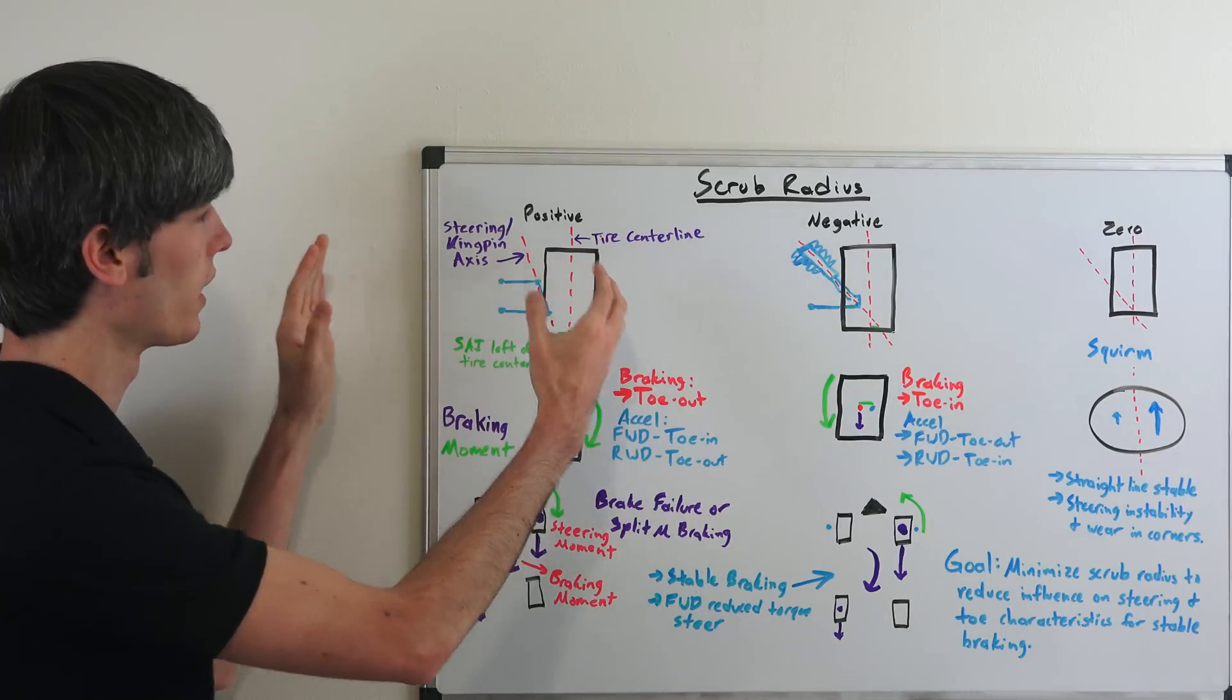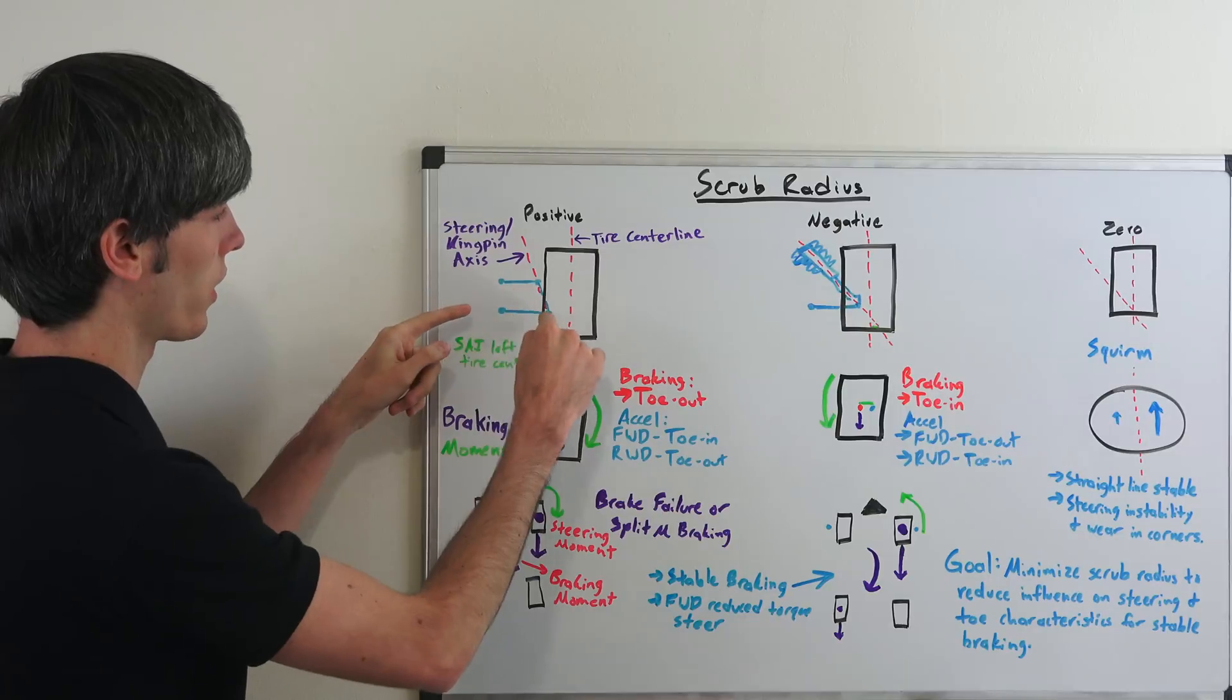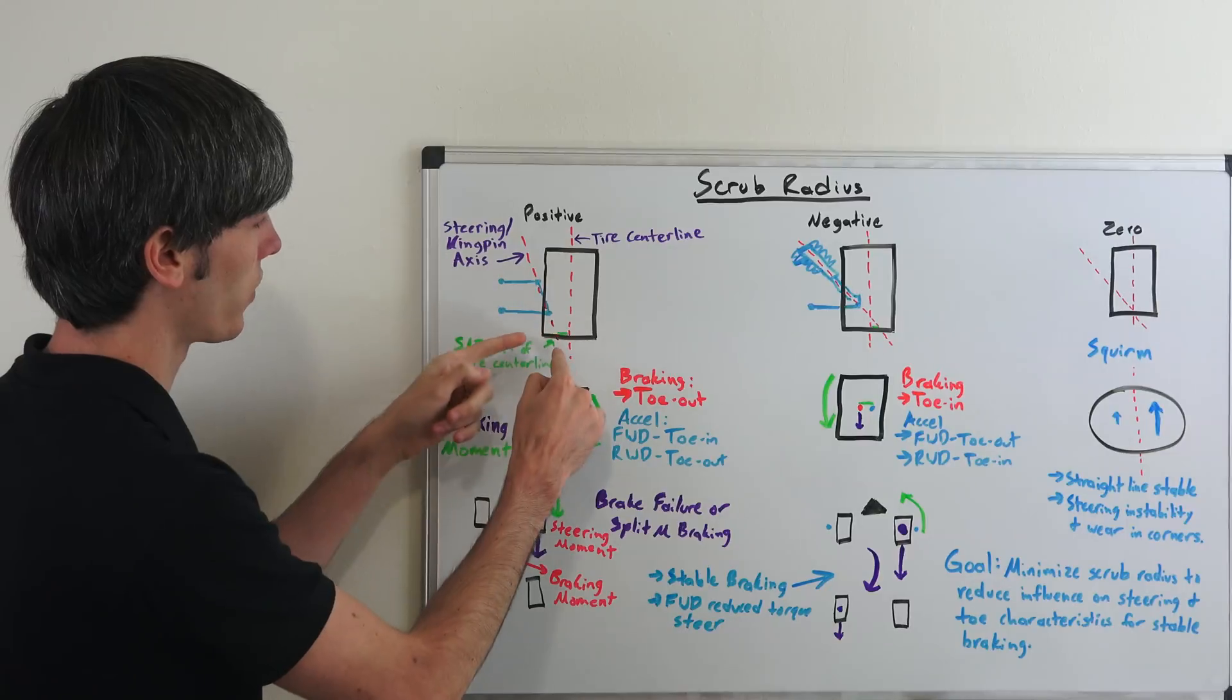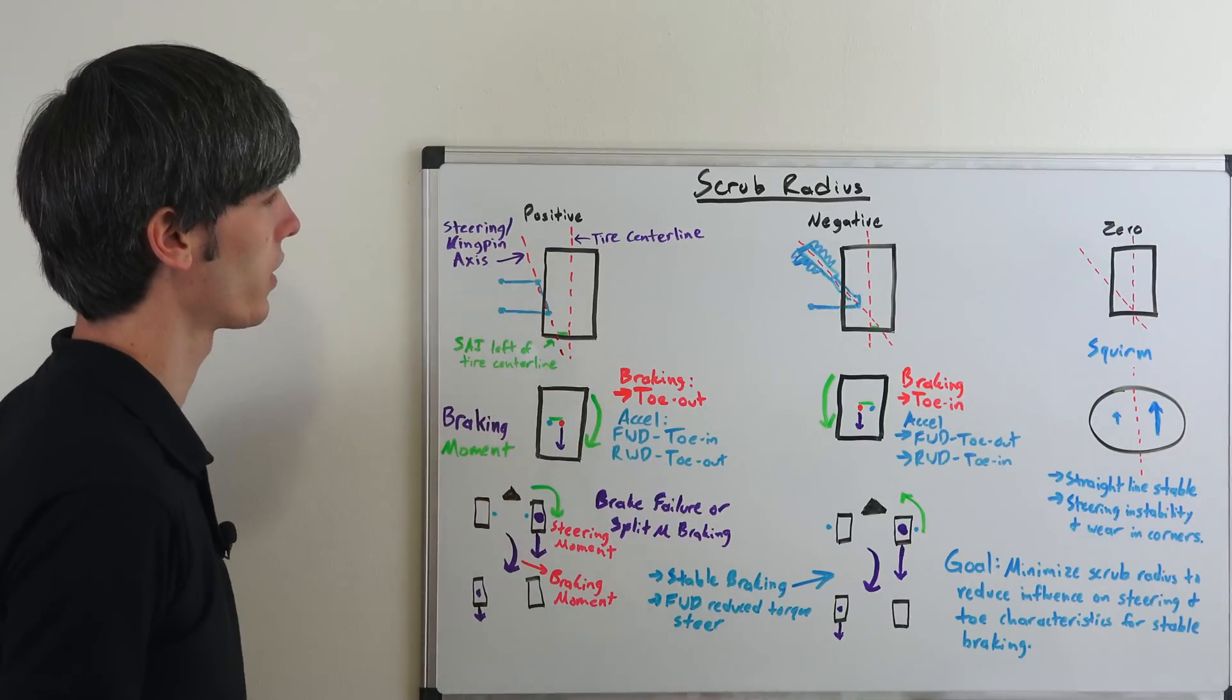if we're looking at the back of the vehicle and this is the right side, so this is our inside suspension here, if that's on the inside where that intersects then that's going to be a positive scrub radius.